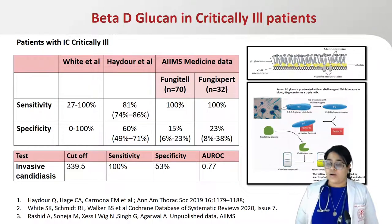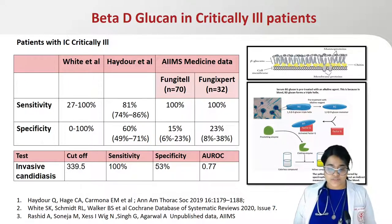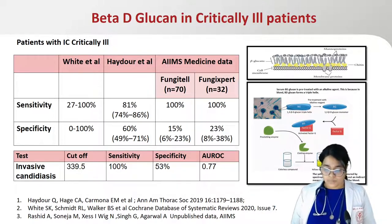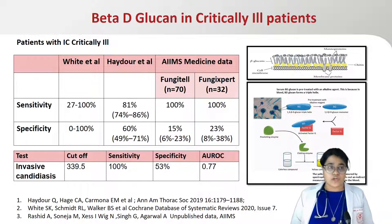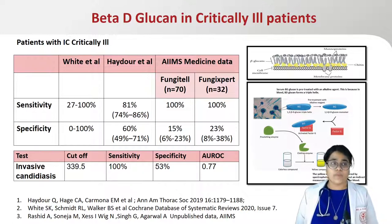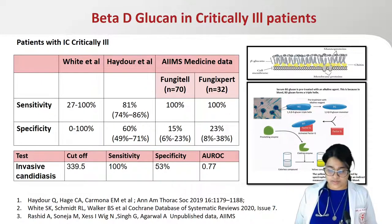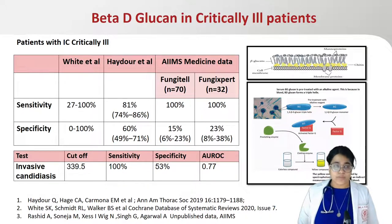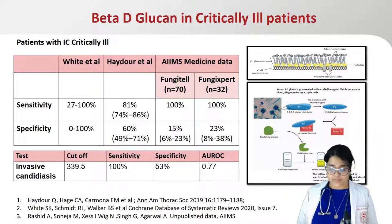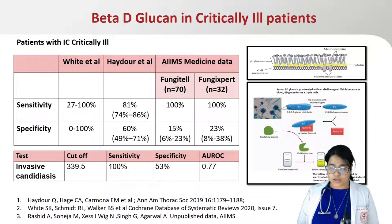Regarding investigations for invasive candidiasis: the use of beta-D-glucan in critically ill patients shows a wide range of sensitivity and specificity in the literature, ranging from zero to 100%. Our studies report high sensitivity of 100% but lower specificity of 15–23%, attributable to false positives from heavy Candida colonization, mucositis, or medication-related factors such as albumin, IVIG, surgical gauze, or hemodialysis filters. A higher cutoff of almost four times the recommended level was needed to maintain sensitivity of 100% while increasing specificity to 53%, indicating beta-D-glucan must be used in conjunction with clinical presentation and other investigations.